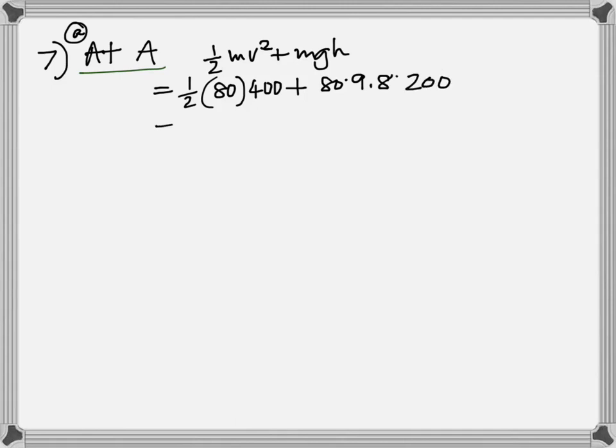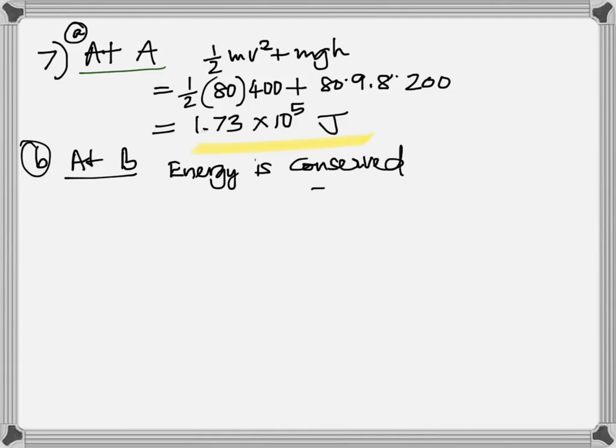Number 7. First at A, it has both kinetic and potential. Plug in the numbers. Mass is 20, so square it, you get 400. Then the potential energy. Add those numbers up, 1.73 times 10 to the 5 joules. At point B, it only has kinetic energy. You know that energy is conserved. So whatever total energy it had at A, the same must be the energy at B. That's why we say 1.73 times 10 to the 5.